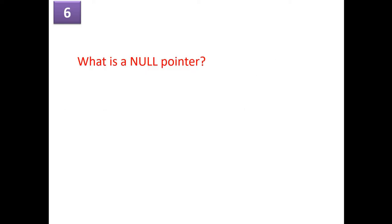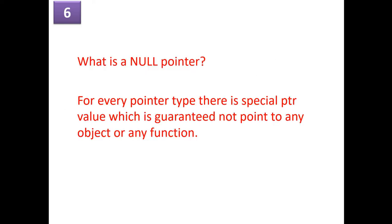What is a null pointer? For every pointer type, there is a special pointer value which is guaranteed not to point to any object or any function. Such a pointer is called a null pointer.